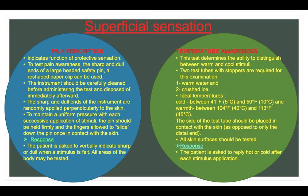Procedures for superficial sensation. For pain perception — which indicates a function of protective sensation — the sharp and dull ends of a large-headed safety pin or reshaped paper clip can be used. The instrument should be carefully cleaned before the test and disposed of immediately afterward. The sharp and dull ends are randomly applied perpendicularly to the skin. To maintain uniform pressure, the pin is held firmly and the fingers are allowed to slide down the pin once in contact with the skin.